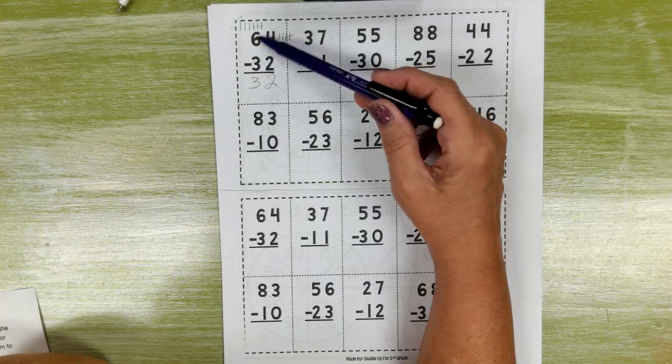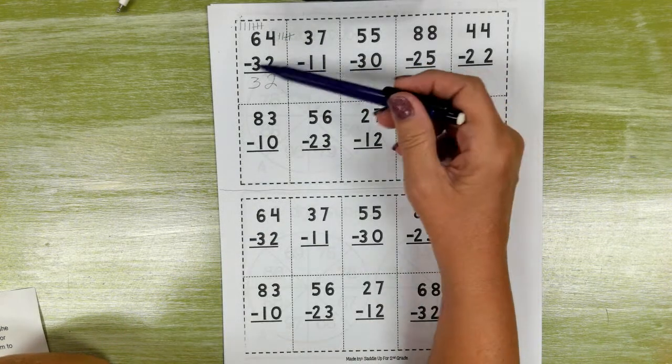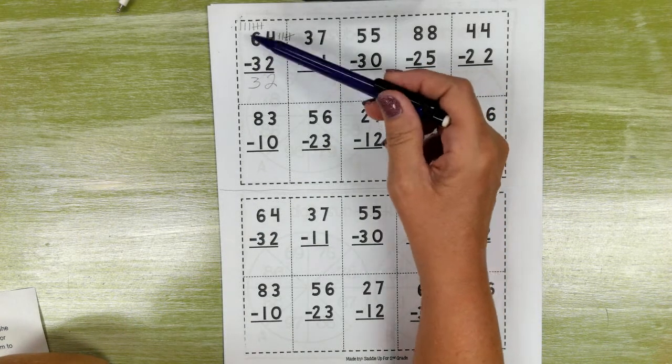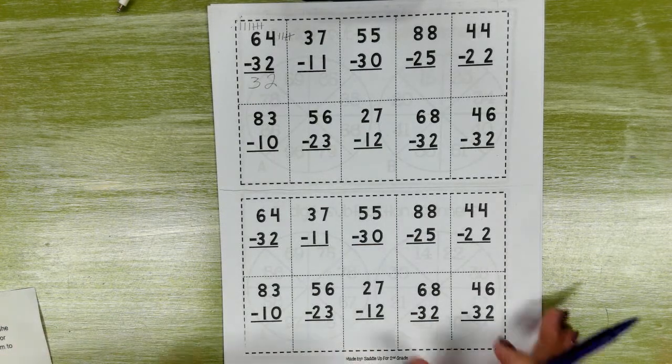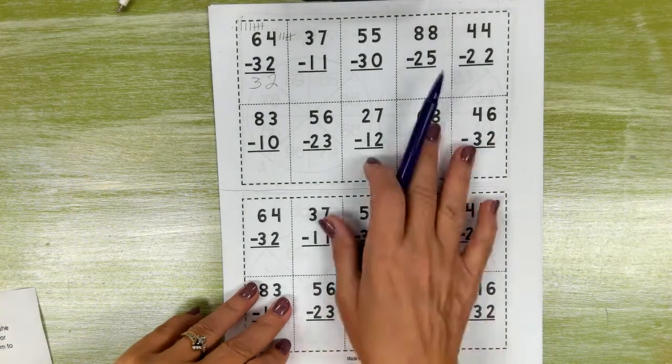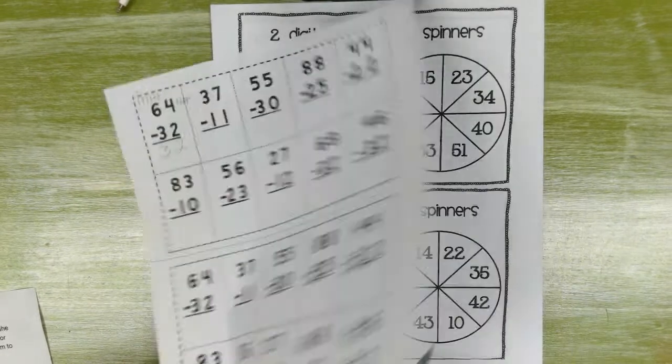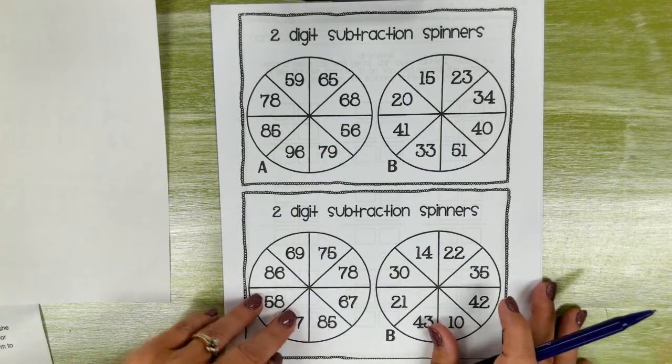Two and two is four, and three and three is six. It's doubles! Yay! Anyway, just want to let you know, just do that top part.